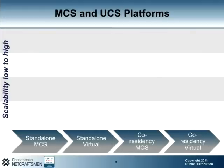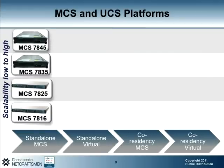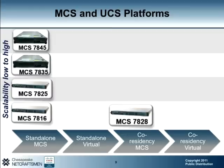Now that we have a decent feel for the benefits of virtualization to a UC solution, we should start looking at the MCS and UCS hardware platforms that are in play. The MCS platforms are alive and well. Cisco has a variety of standalone MCS server platforms to choose from. In order of resource scalability, we have the MCS7816, MCS7825, MCS7835, and the MCS7845. Cisco also has the MCS7828, a purpose-built platform that runs the business edition of the Unified Communications Manager and Unity Connection. For the Cisco UCS solution, there are two platform flavors.